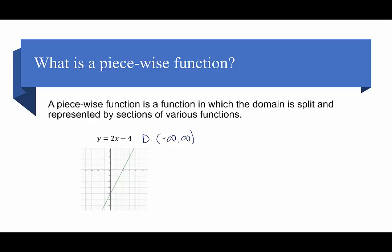In a piecewise function, we don't look at the domain from negative infinity to infinity — we just look at a piece of this graph. For example, in this graph on the right, we're only looking when x is less than or equal to positive 3. So the graph on the right has a domain from negative infinity to positive 3, where positive 3 is included. This is just a snippet of the graph — a ray of the original line. We just look at one piece of this function, hence piecewise function.